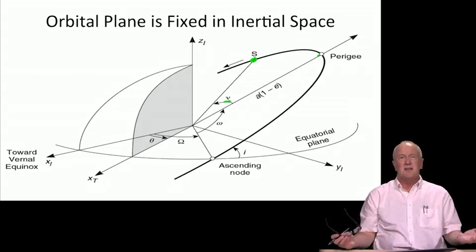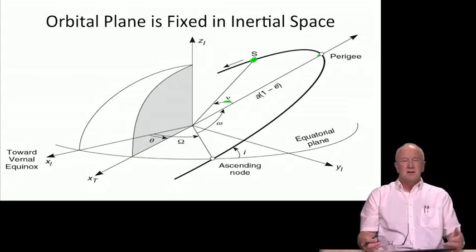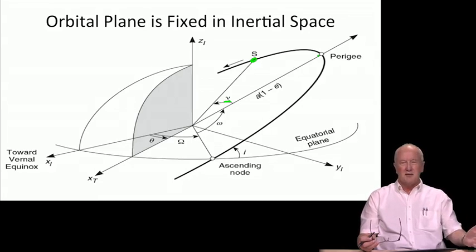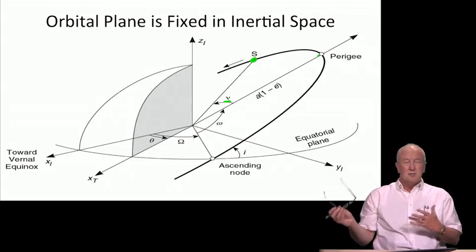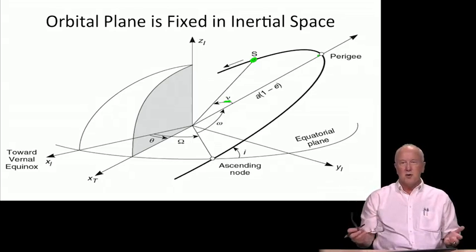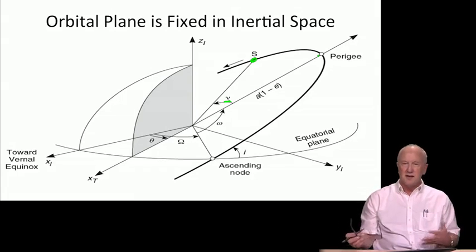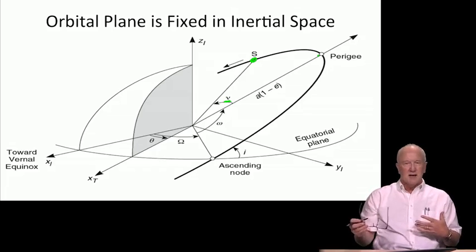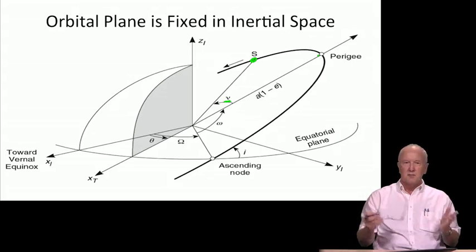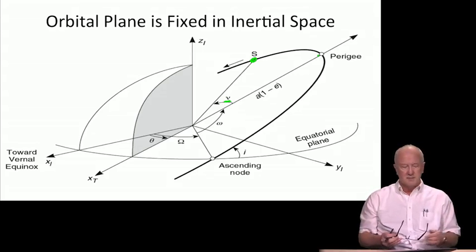So the question before us is how do we take those Keplerian parameters and then come up with a location for the satellite which is Earth-centered, Earth-fixed. Now you may ask, why is that the goal? That's the goal because all our users or 99.99% of them reside on the surface of the Earth. So they need to bring the location of the satellite into the same frame where they expect and hope to solve for their own position.